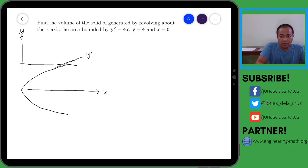So this is y squared equals 4x and y equals 4, and x equals 0. X equals 0 is actually the y-axis. And we are going to revolve this bounded region, this is actually the bounded region right here. Okay, so that is the bounded region and we are going to revolve that region about the x-axis.